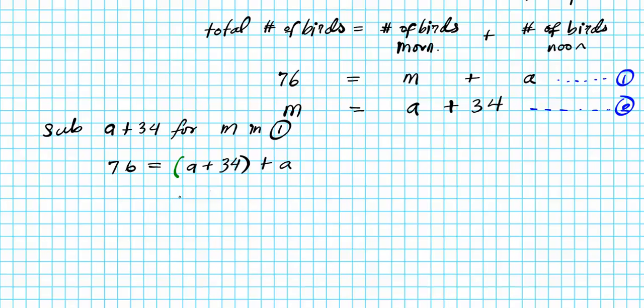Let's solve this equation. We can just drop that parenthesis, distribute that one, nothing changes. A plus 34 plus A. Then we collect like terms. 34 is a constant, we move that to the left side, and we have 76 minus 34 equals A plus A.